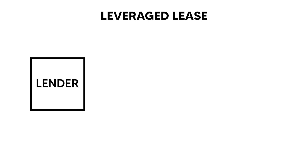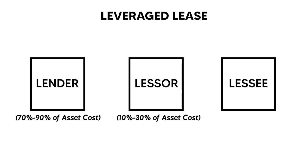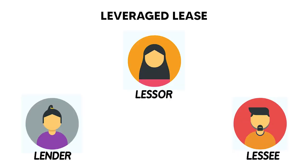A leveraged lease is not a separate type of lease — it is just a variation of the finance lease. In a leveraged lease, there are three parties: the lender, the lessor, and the lessee. The lender finances a major part of the asset cost, usually up to 70 to 90 percent, and the lessor finances the remaining part, so the lessor is considered as the equity participant. In a leveraged lease transaction, the lessor leases the asset to the lessee, and in turn the lessee pays the lease rentals to the lessor, who then pays back the principal along with the interest to the lender in the form of installments.